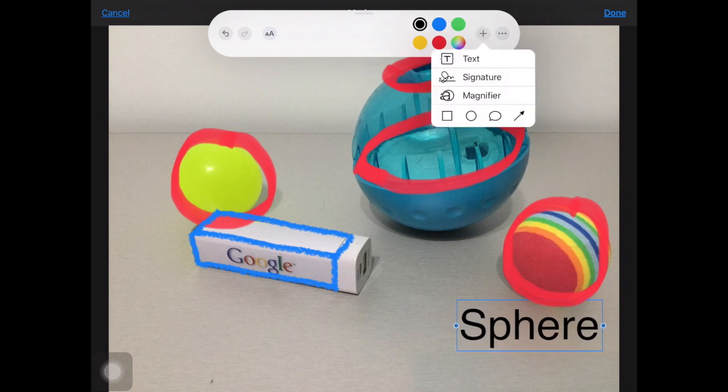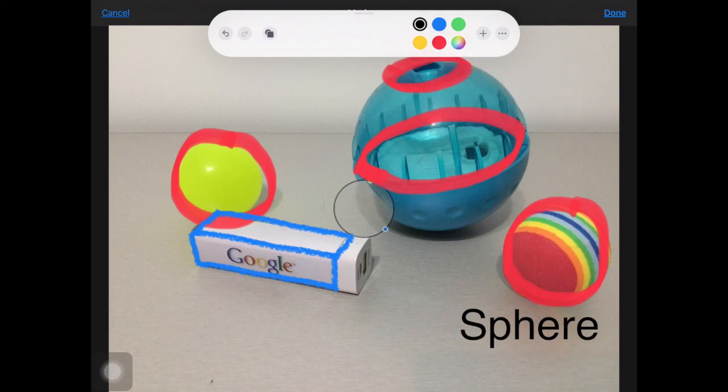Also on the plus menu here there's a magnifier which might be really handy if you're doing something where you want to look really closely at an object. You can adjust with this green circle the zoom in inside of the circle and with the blue circle you can adjust the size of that magnifier loop.